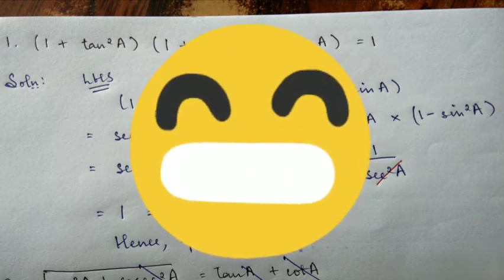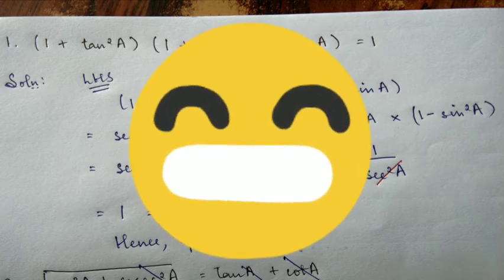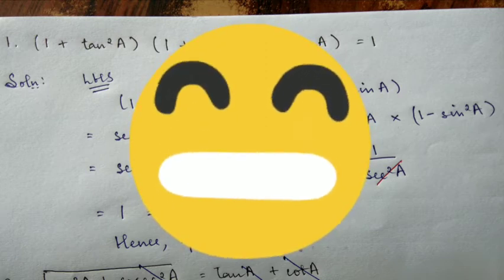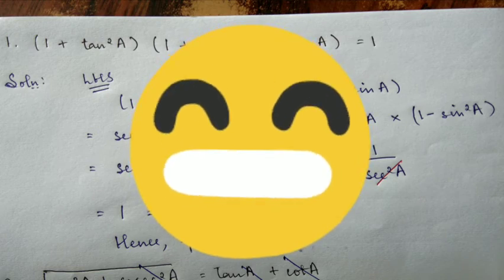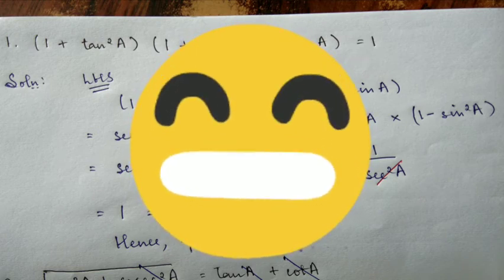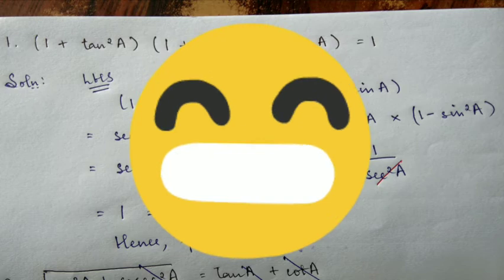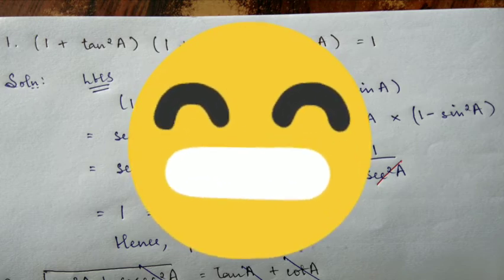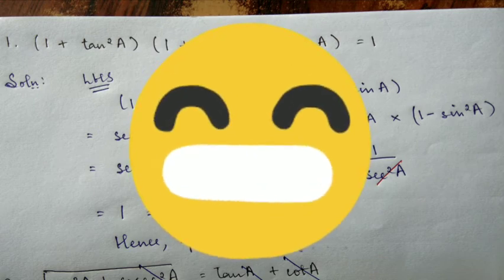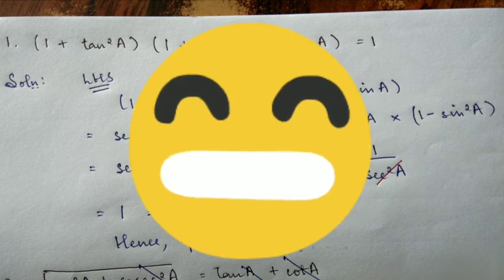Hello everyone, welcome back. Today I will be explaining the solutions of question number 7 till 14 of Exercise 12. Before I start, I just want to say that for this exercise on trigonometric identities, the questions are manageable. For trigonometry questions like these, avoid trying to memorize — instead understand the approach so you can solve them confidently.